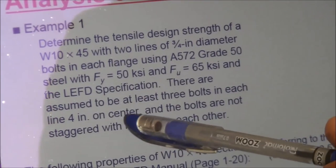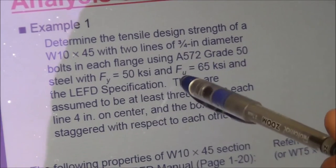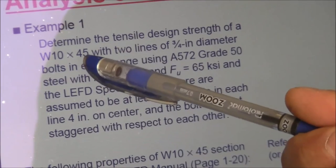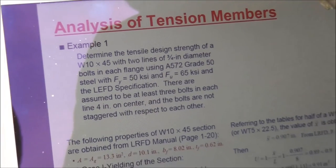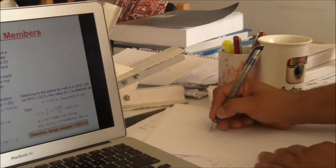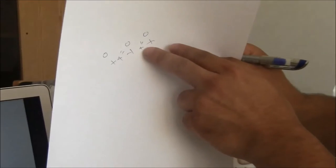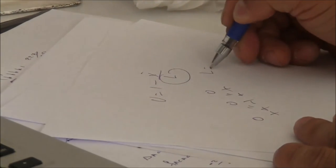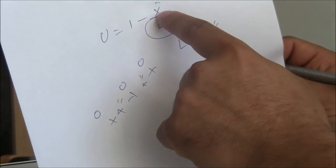With at least three bolts per line and bolt spacing of 4 inches, the connection length L = 8 inches. We apply U = 1 minus x̄ over L with L = 8 inches. The only remaining unknown is x̄, which for a W-shape is obtained from the T section sliced from it. For W10×45, we look up the WT5×22.5 in the manual.